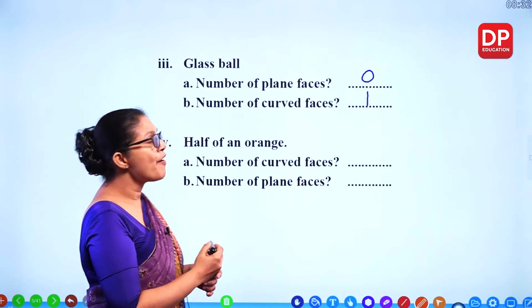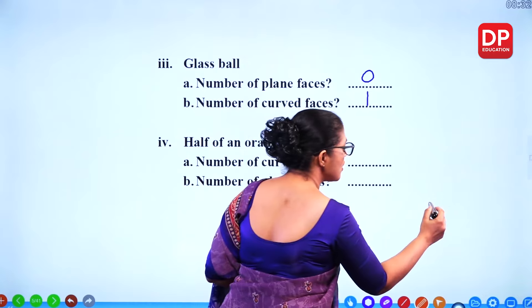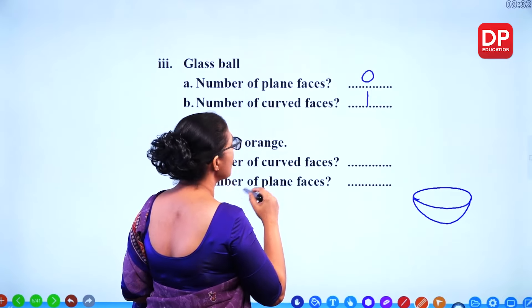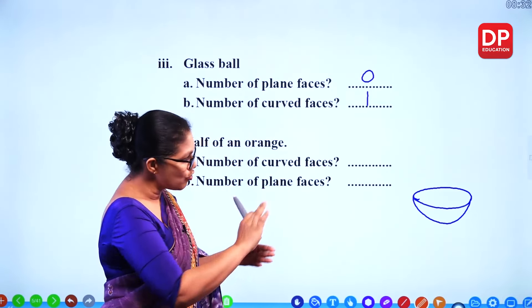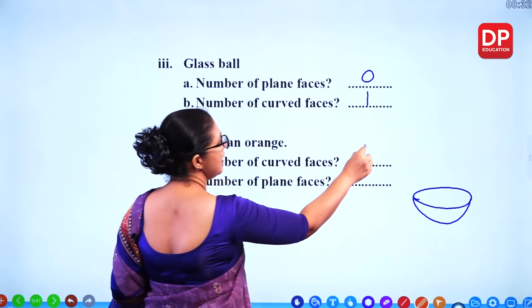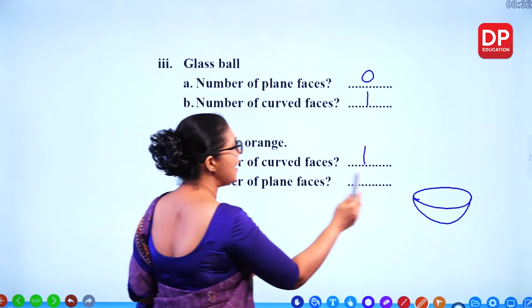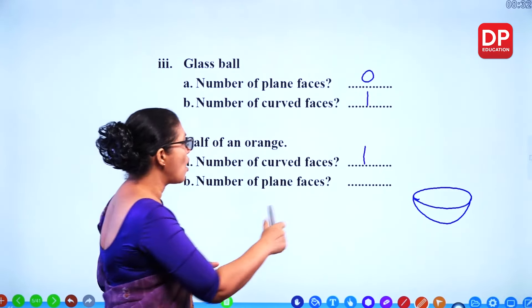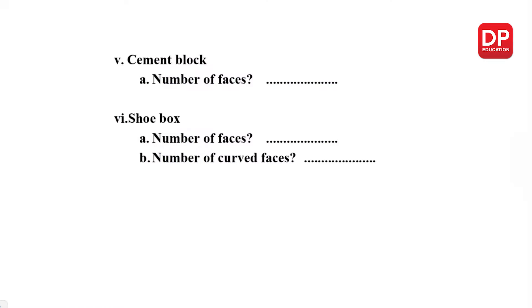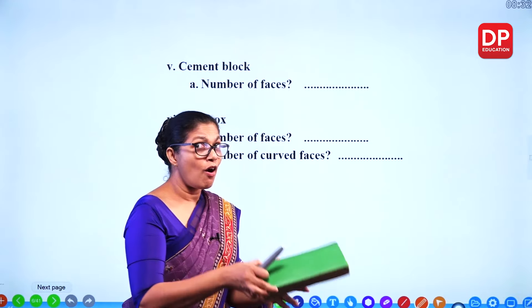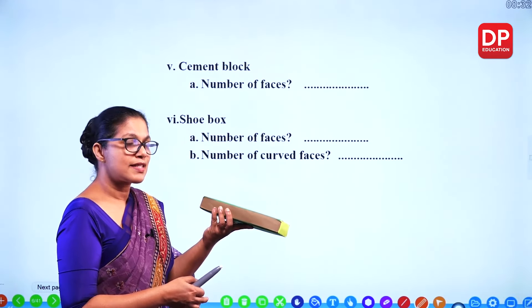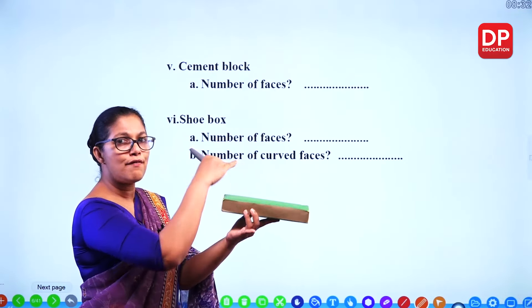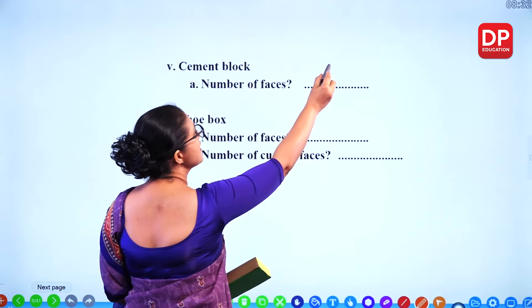Half of an orange has one curved face and one plain face — that's a circular shape. A cement block is also like a matchstick box, so counting its faces: 1, 2, 3, 4, 5, 6 — there are six faces.